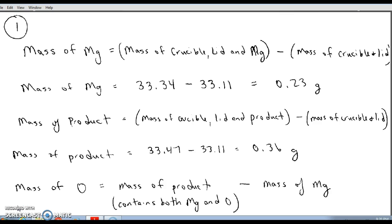Question number one asks you to find the mass of magnesium, the mass of the product, and the mass of oxygen. The mass of magnesium is found using the data. You simply subtract the mass of the empty crucible and lid from the mass of the crucible, lid, and magnesium. In my sample data I had 33.34 grams for the crucible, lid, and magnesium and I subtract the 33.11 grams of just the crucible and lid by itself to get 0.23 grams for the mass of magnesium that was used in the lab.